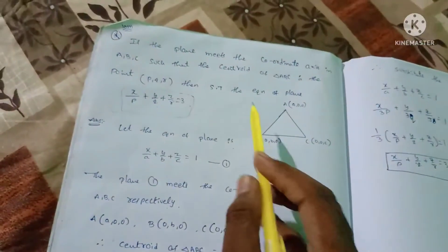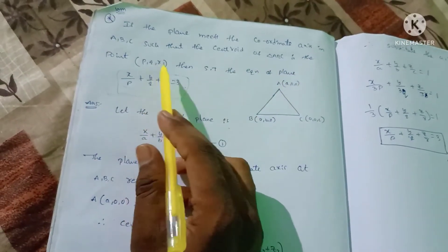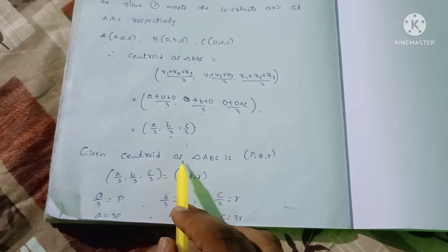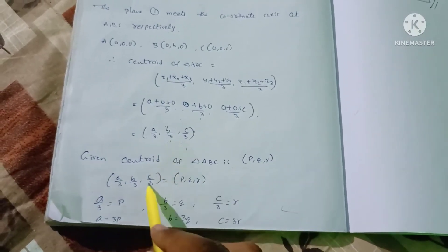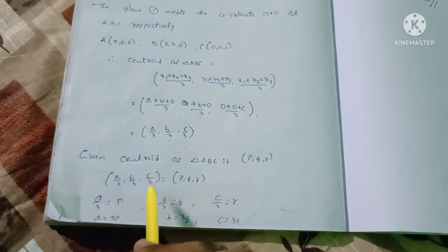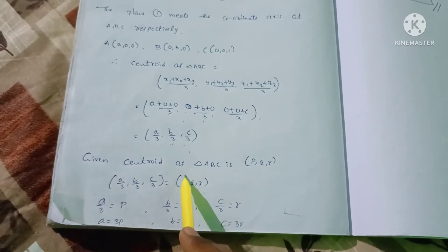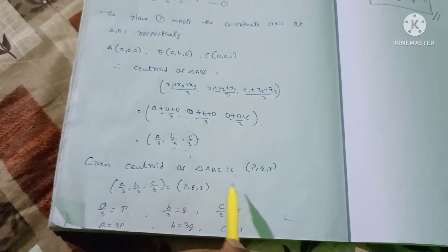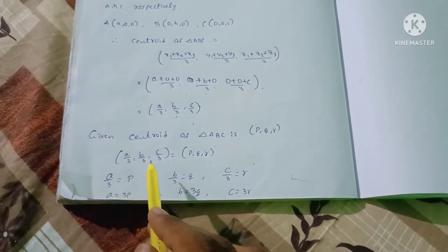But we are given that the centroid of triangle ABC is (p, q, r). So we equate: a/3 = p, b/3 = q, c/3 = r.